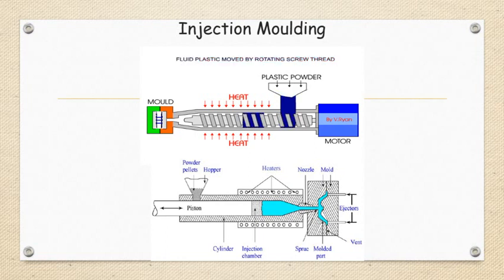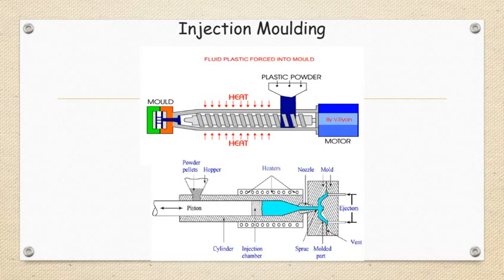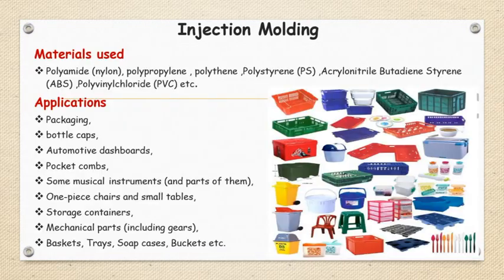In the diagrams shown, the bottom diagram illustrates the plunger arrangement and the upper diagram shows the lead screw arrangement. The next diagram shows the actual equipment or actual injection molding machine. Next, we look at the materials used for the injection molding process.